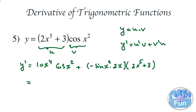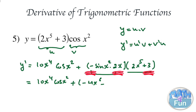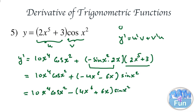Now we simplify. We write 10x to the power 4 cosine x squared for the first term. For the second, we combine minus sine and 2x with the bracket: minus 2x times 2x to the power 5 gives minus 4x to the power 6, and minus 2x times 3 gives minus 6x, all multiplied by sine x squared. Written another way: 10x to the power 4 cosine x squared, minus the quantity 4x to the power 6 plus 6x, times sine x squared.